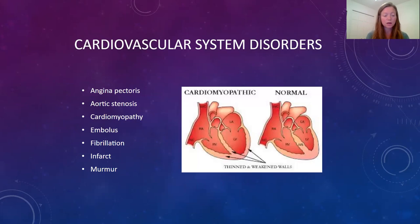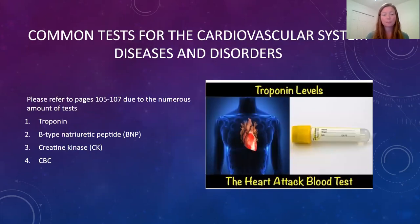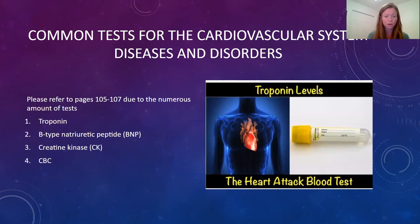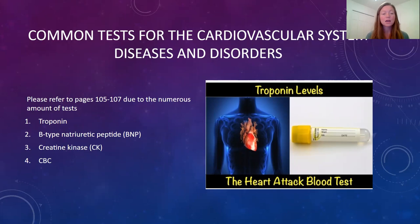Some common disorders of the cardiovascular system include angina pectoris, cardiomyopathy — which is an enlarged heart — emboli, which is a clot, atrial fibrillation, myocardial infarction or heart attack, and murmurs. Some common tests of the cardiovascular system are found on table 5-10, pages 105 through 107 — quite a lengthy table, so definitely take time to review it. Some of the tests may help diagnose things such as sickle cell disease, septicemia, anemia, cancers, hemochromatosis — which is too much iron in the body — and many more.